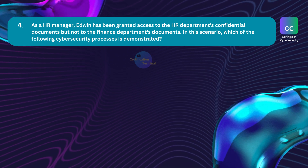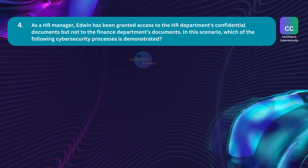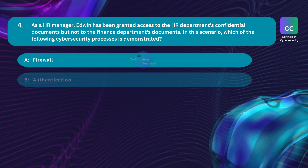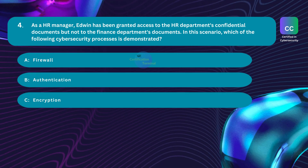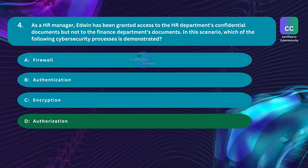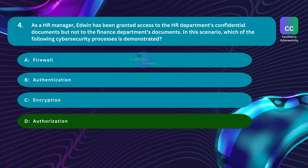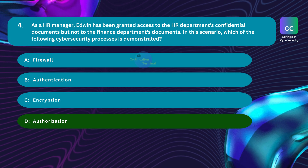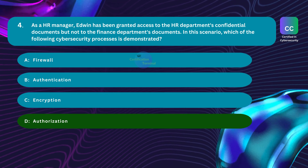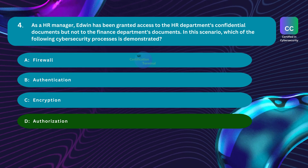Question number four: As an HR manager, Edwin has been granted access to the HR department's confidential documents but not to the finance department's documents. Which of the following cybersecurity processes is demonstrated? The correct answer is authorization. Edwin has been authorized to access specific resources based on his role or responsibilities within the organization.